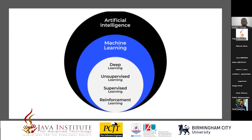Then we have supervised and unsupervised learning. In supervised learning, let's say you have an apple and a guava, and you show them to a toddler — maybe a small kid of two or three years. After some time, when that toddler sees an apple or guava somewhere else, he or she identifies this is an apple, this is a guava. That is supervised learning.